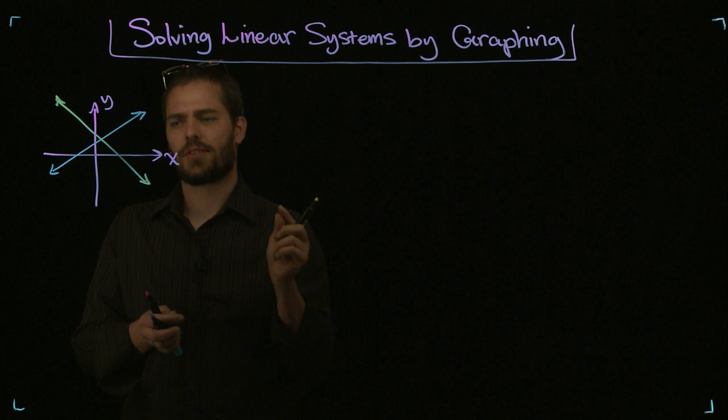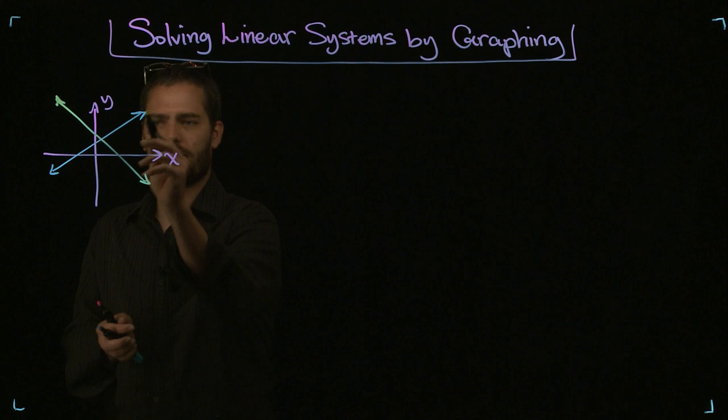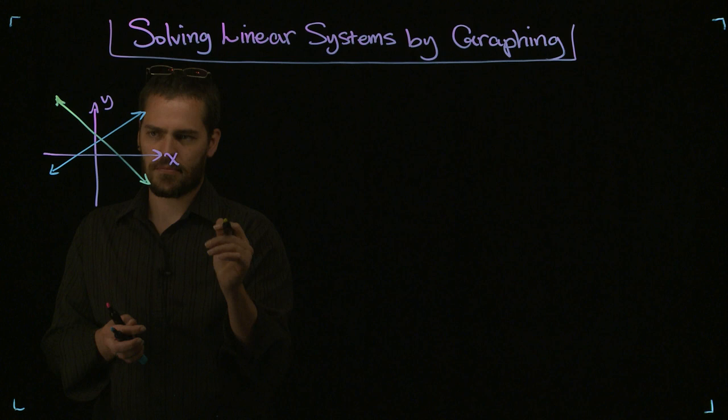Now, remember that every point on a line is a solution to the equation that generated that line. That's true for this blue one, it's true for this yellow one. So, really what we're asking ourselves is, at which point do they share the same solution?